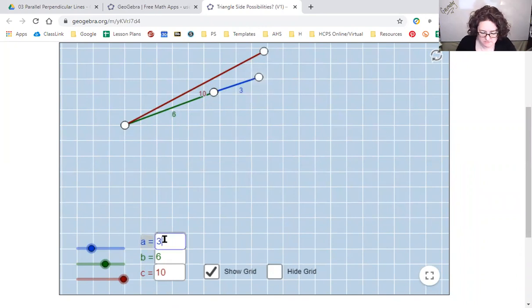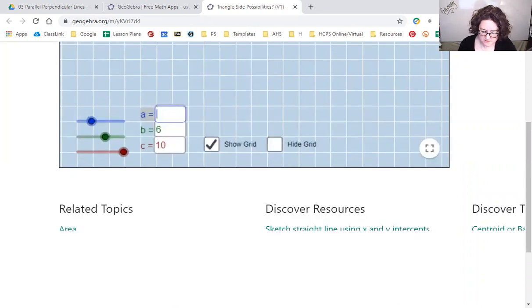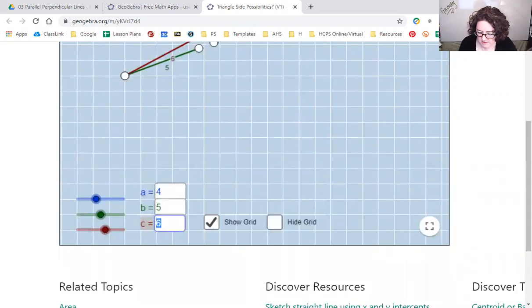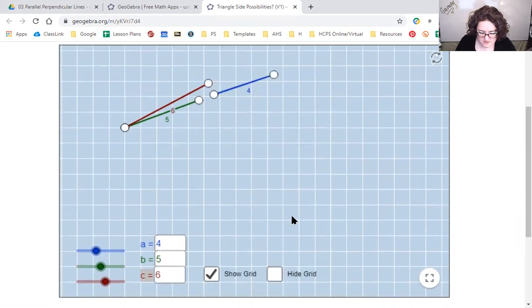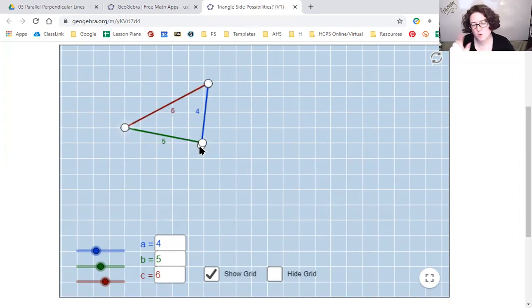How about 4, 5, and 6? Let's change this to 4, B will change to 5, C will change to 6. I could use the slider bars, but typing means I've got it that much more exact. Let's see if I can twist the 4 around. This one is going to work, takes a little finagling, but I can line them up. I know it makes a triangle. So 4, 5, 6 works.